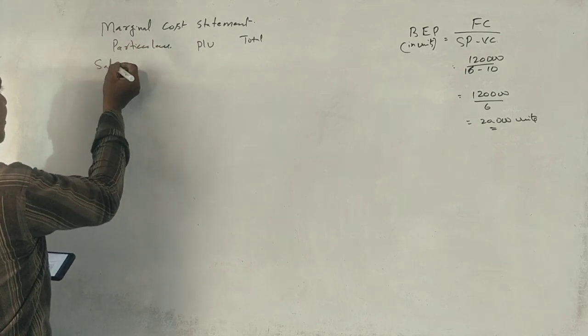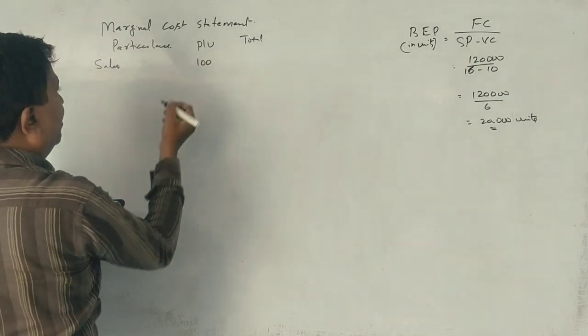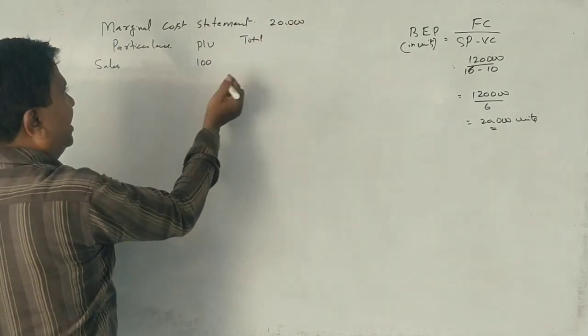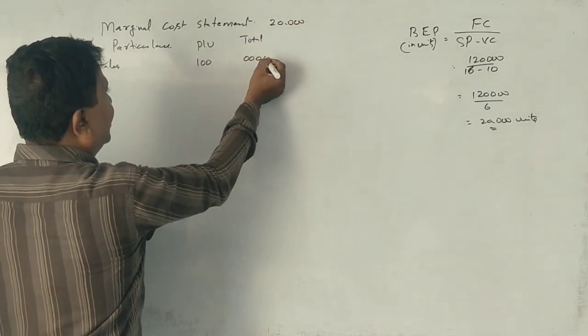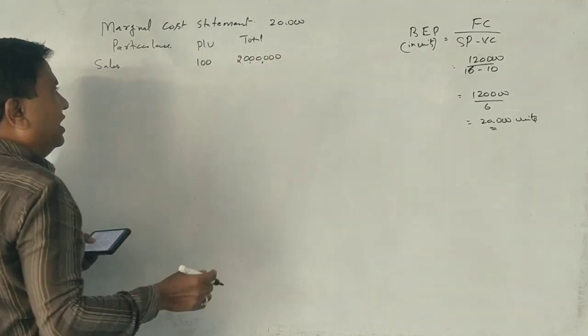Particular. First, sales. One unit is 100 rupees. What unit is? 20,000 units. 20,000 into 100. That is 20 lakhs.